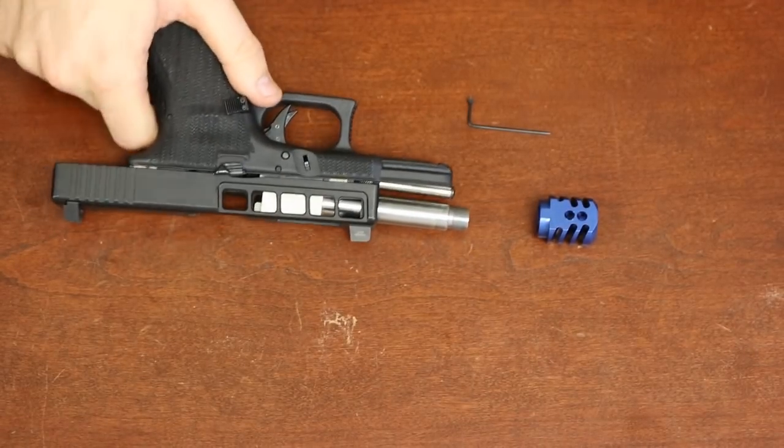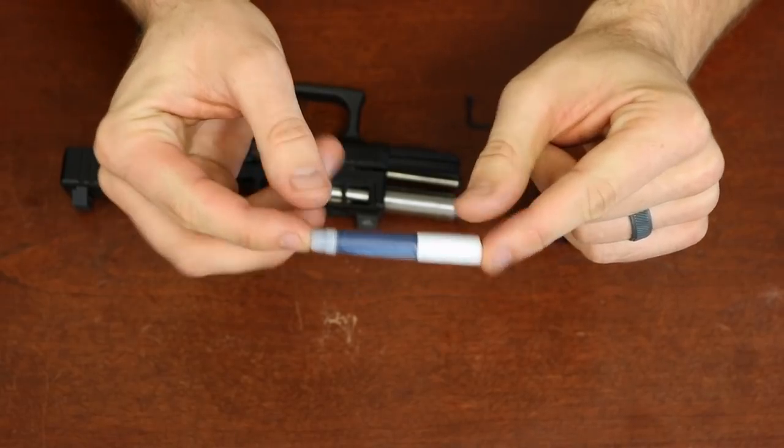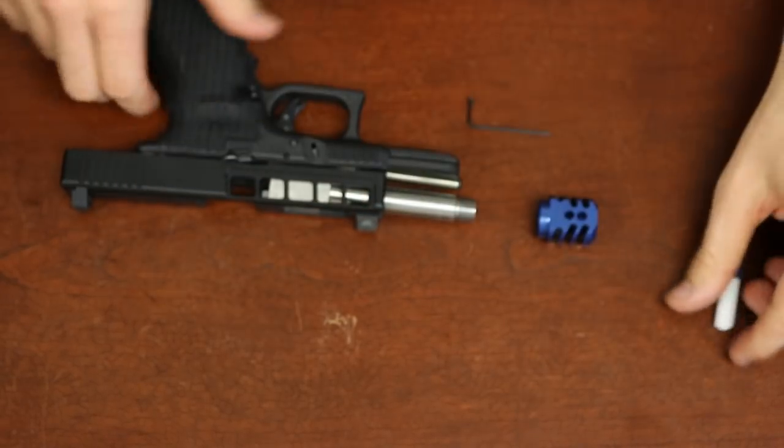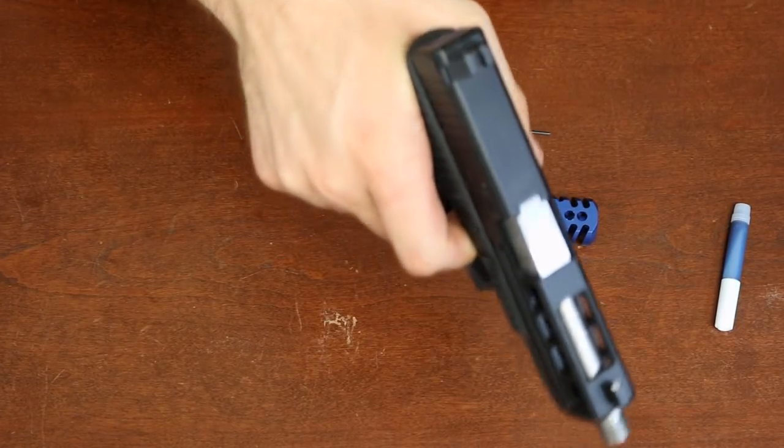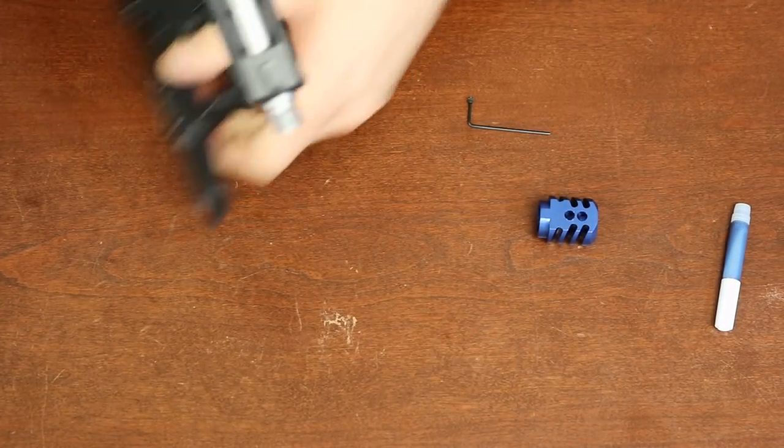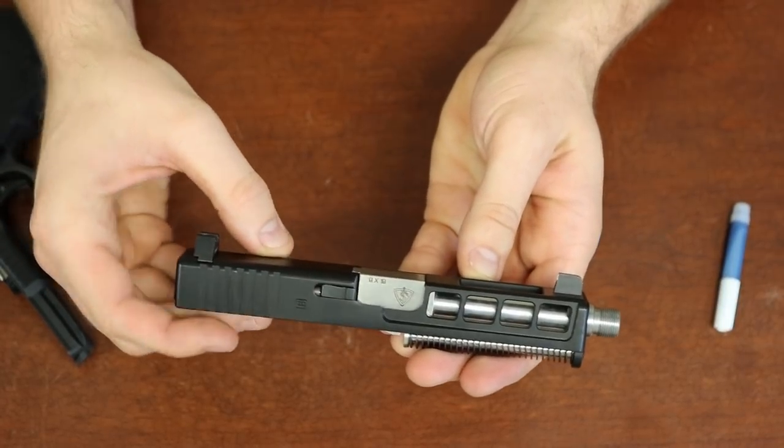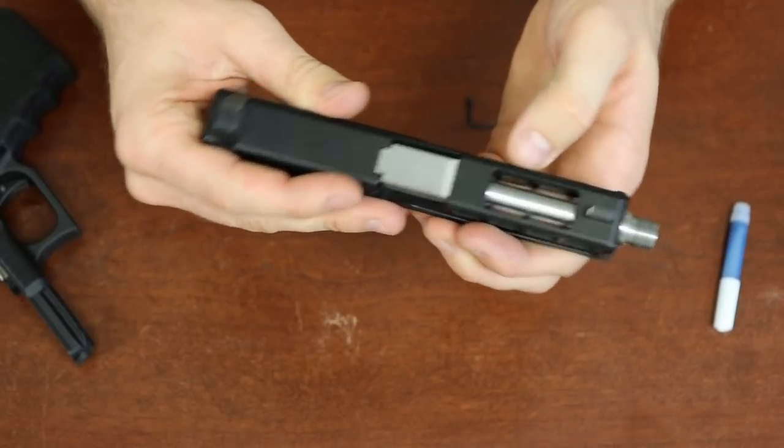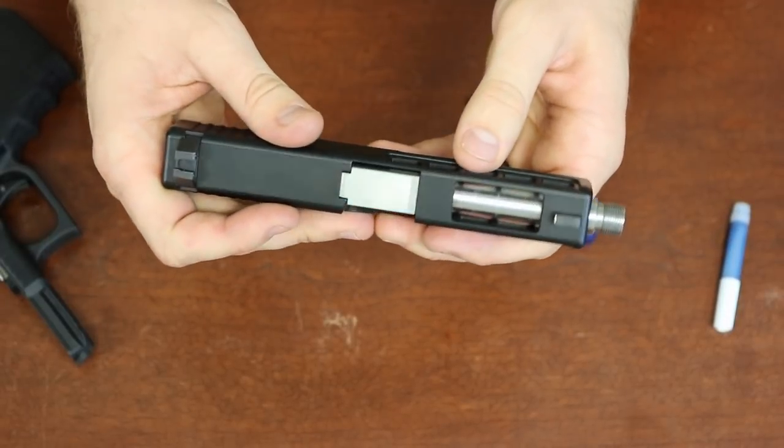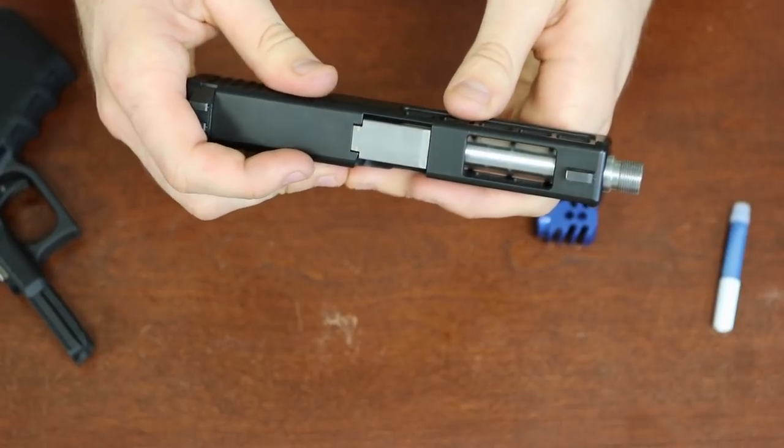Last thing you're going to need is a little bit of blue Loctite. Start out and point in a safe direction. I suggest removing your slide from the gun. It's just the best way to be able to access the set screw and really make sure that you get this on there.